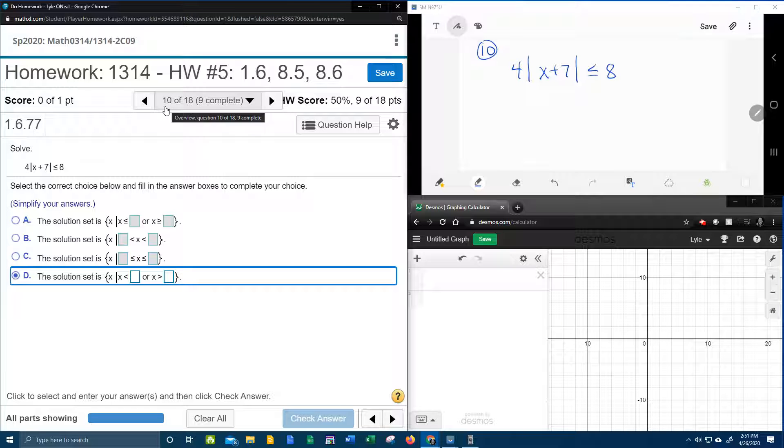Alright, here we go. Question number 10 from our College Algebra homework number 5 in MyLabMath wants us to solve an absolute value inequality. So I've got that written down up here. Let's get started.